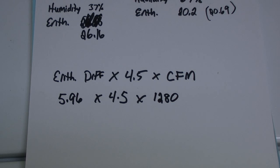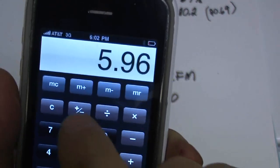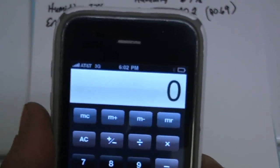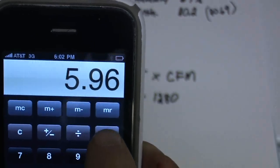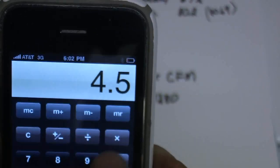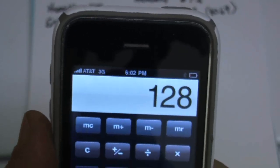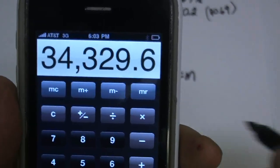Alright, so we're going to multiply all that together now. Let me clear this out again. So we're going to take 5.96 times 4.5 times 1280 equals 34,329.